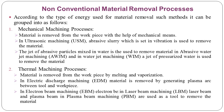The next type of non-conventional material removal process is the thermal machining process, where the energy used is thermal. Material is removed from the workpiece by melting and vaporization. In Electric Discharge Machining (EDM), material is removed by generating a plasma arc between tool and workpiece. In Electron Beam Machining (EBM), Laser Beam Machining (LBM), and Plasma Beam Machining (PBM), the respective beams are used as a tool to remove the material. So EDM, EBM, LBM, and PBM are types of thermal machining processes.